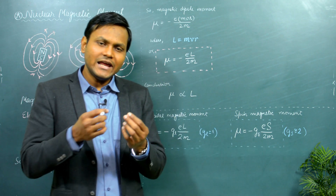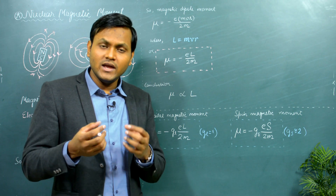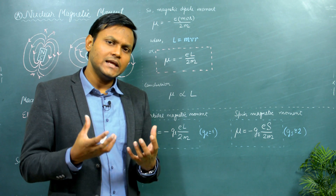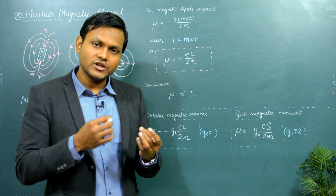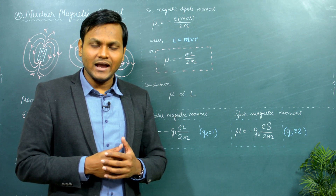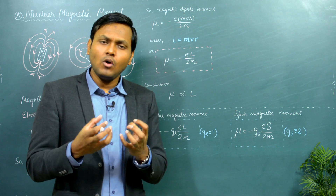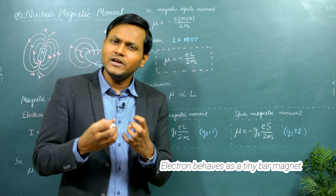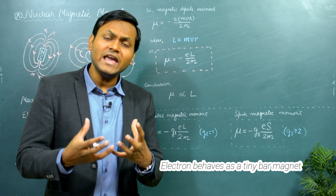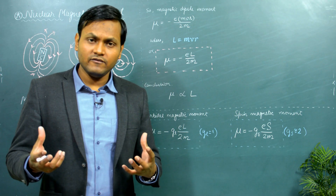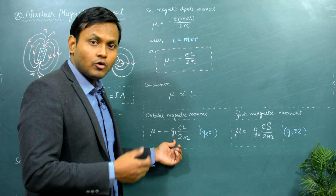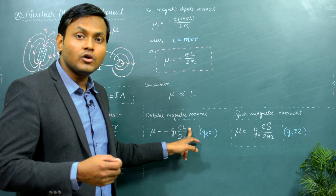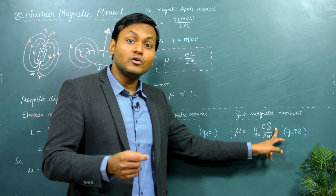Thus the electron revolving around the nucleus has a magnetic moment of its own, and the electron itself also has a magnetic moment of its own. The total magnetic moment of the electron would basically be a vector sum of its motion around the nucleus as well as its own intrinsic spin angular momentum. We can conclude that the electron behaves as a tiny bar magnet. Here g_l represents the g-factor for orbital motion, g_s for spin motion, l for orbital angular momentum, and s for spin angular momentum.